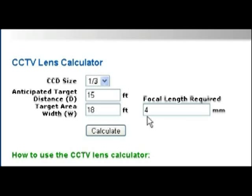And it comes back and calculates a focal length required to achieve this target area width at this distance. So in this case, we need a 4 millimeter lens. Now CCD cameras come with a variety of lenses, but usually they don't have a 4 millimeter lens as a standard lens. Usually the standard size that would be closest to that would be a 3.6 millimeter lens. So you can go ahead and use a 3.6 millimeter lens if this is approximately the width that you want.